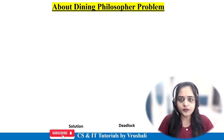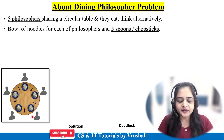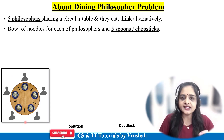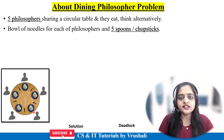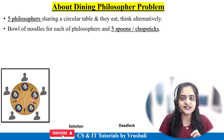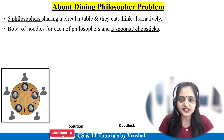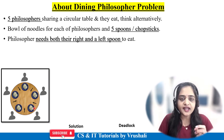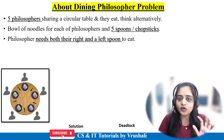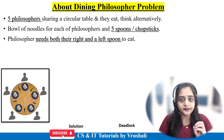Now what exactly is the dining philosopher problem? In this particular diagram, there are a total of 5 persons — we can say 5 philosophers — seated at a circular dining table. In front of every philosopher there is a bowl of noodles. There are 5 philosophers and 5 spoons, also called chopsticks. The condition is: suppose a person wants to eat the noodles — they require 2 spoons, left and right. There are only 5 spoons total, meaning limited resources and multiple processes.